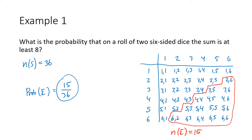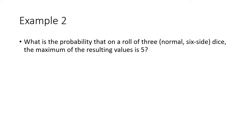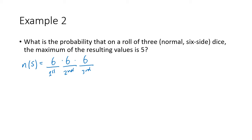Similar problem: what's the probability that on a roll of three normal six-sided dice, the maximum of the resulting values is five? In other words, the maximum of all three individual dice is the number five. We need to make order matter — if we don't, we'll have duplicate results that aren't equally likely. The size of our sample space is 6 × 6 × 6 = 216 equally likely outcomes.